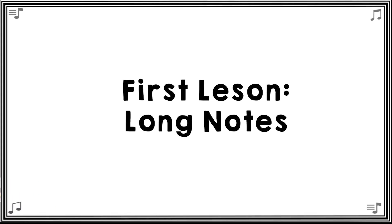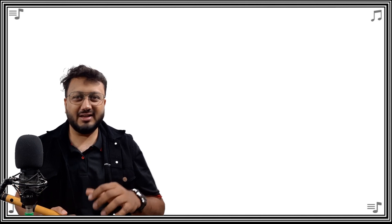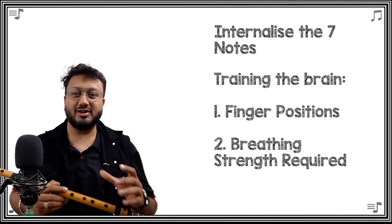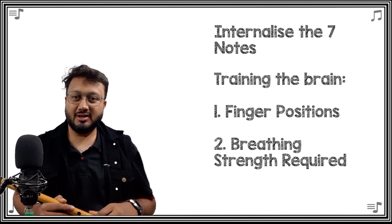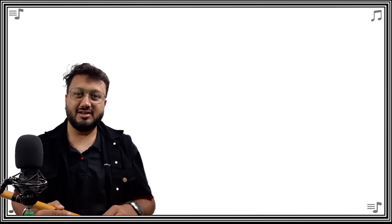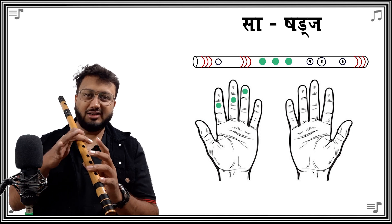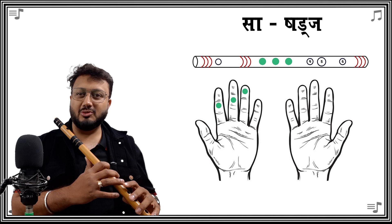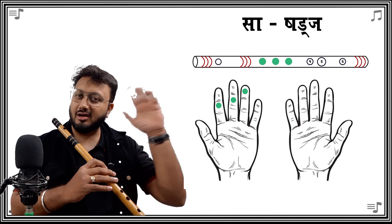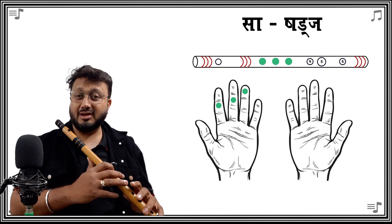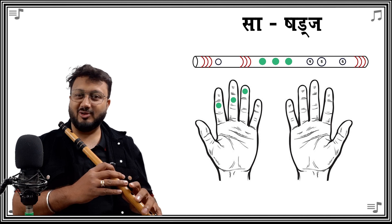With this basic theory, let's get to playing them on the flute — our first lesson: the long notes. I hope you now have a good grip of your flute and can blow into it with ease. The next step is to internalize the seven notes and train the brain in the blowing strength and finger positions. Let us start with sa or shadja. To play sa with the three-finger grip, close holes one, two, and three. Take a deep breath and blow into the flute to produce a steady sound. Keep extending the sa syllable in your mind — it tells your brain to remember the position of sa on the flute.